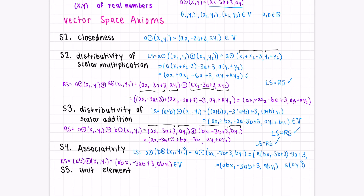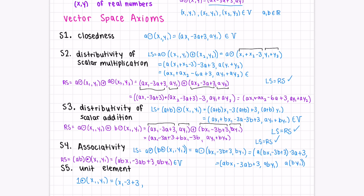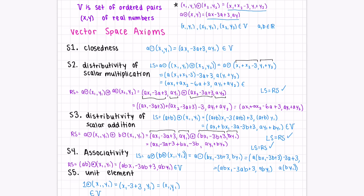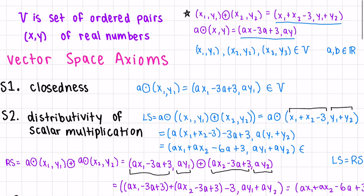Lastly, let's check the unit element. If we multiply 1 times (x1, y1), do we get back (x1, y1)? Applying the rule: 1·x1 − 3·1 + 3 = x1, and 1·y1 = y1. So we get back (x1, y1), confirming the unit element. To summarize, to show that V with its new addition and scalar multiplication is a vector space, we checked all 10 axioms and saw that all of them were satisfied. Therefore, V is indeed a vector space.